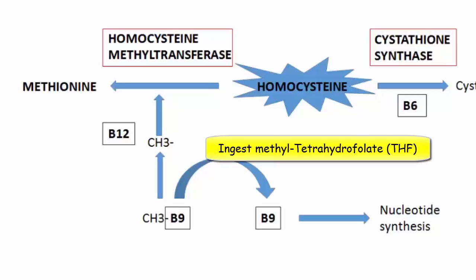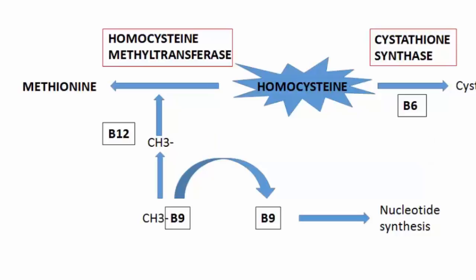So how does this all come together? When we ingest vitamin B9, also known as folate, it comes in with a methyl group attached to it. This is a problem for a couple of reasons. The main purpose of folate is to play a role in nucleotide synthesis, but it can't do this job with the methyl group attached. So now we have homocysteine, which needs a methyl group to be eliminated, and B9, which needs to get rid of its methyl group in order to function properly.